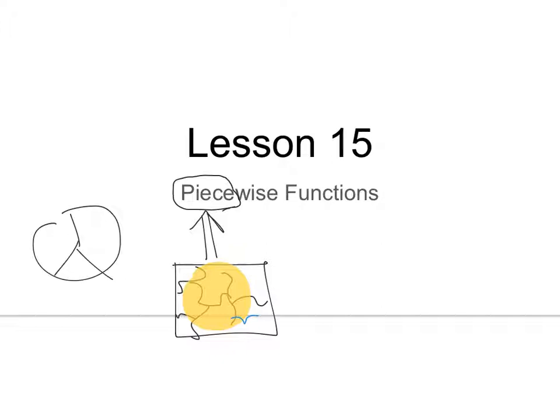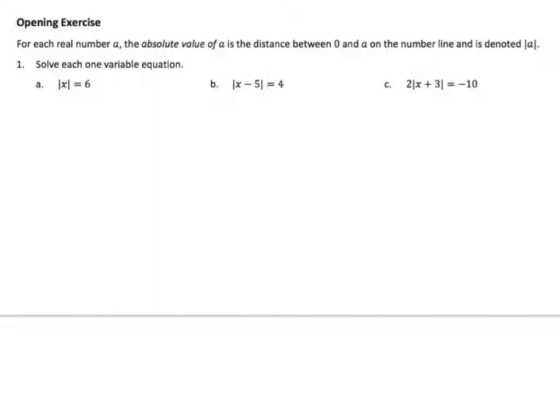We are going to talk about pieces of a function and how they act together. Let's review absolute value a little bit. For each real number a, the definition: the absolute value of a is the distance between 0 and a on a number line, and is denoted bar a bar.